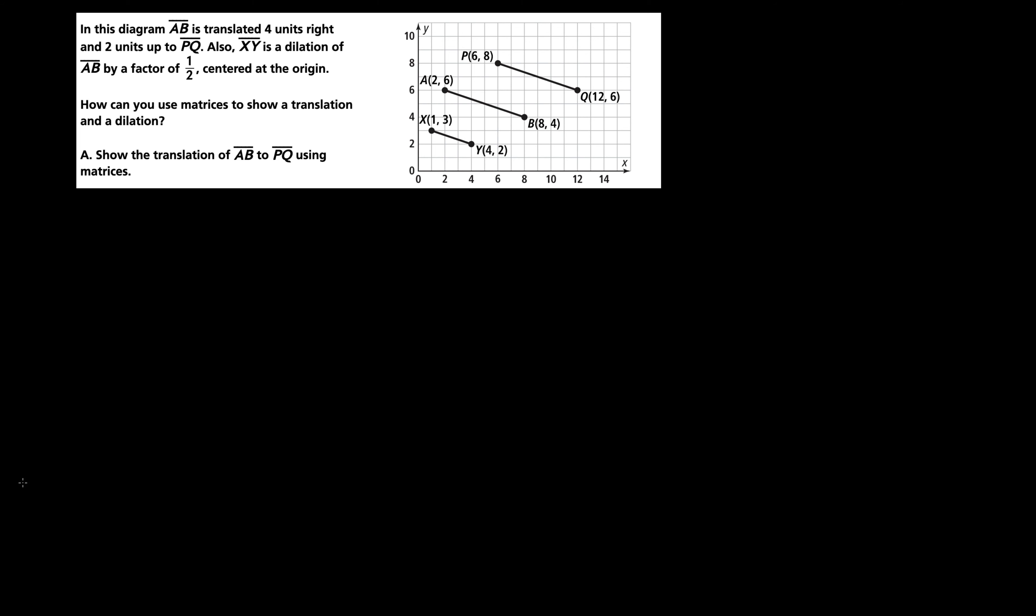What about the dilation of 1 half? Show the dilation AB by a scale factor of 1 half. Well, again, this is a scale factor. So I'm just going to do 1 half times line AB. And we already established AB with the last matrix. It is going to be 2, 8, 6, and 4.